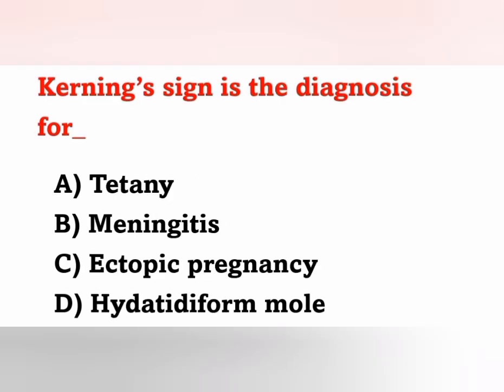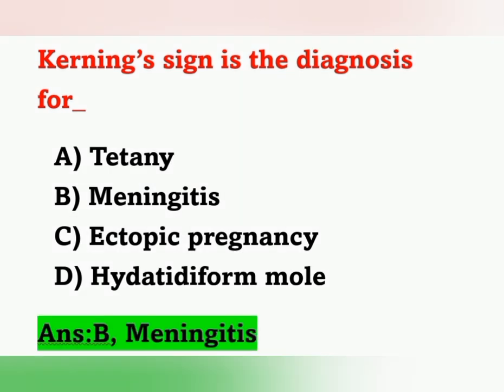Next question: Kernig's sign is the diagnosis for — A) Tetanus, B) Meningitis, C) Ectopic pregnancy, D) Hydatidiform mole. A positive Kernig's sign is one of the diagnostic tools for meningitis. Positive Kernig's sign means loss of ability to straighten the leg completely when the patient is fully flexed at the knee and hip in supine position, indicating meningeal irritation. Both positive Brudzinski's sign and Kernig's sign are assessment findings of meningeal irritation.